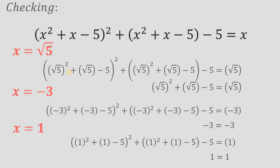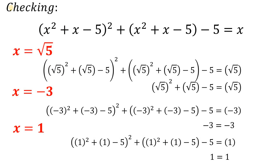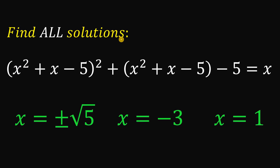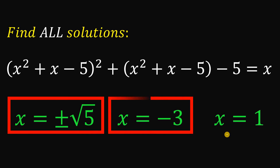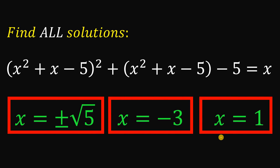And there you have it — these are the four values of x that satisfy this equation: positive or negative square root of 5, negative 3, and positive 1. Here's the checking: I used positive square root of 5 only, but if you plug in negative square root of 5, you arrive at negative square root of 5 equals negative square root of 5. So, to find all solutions to the quantity x squared plus x minus 5 raised to the power of 2, plus x squared plus x minus 5, minus 5, equals x — we found four possible values. And as always, we are done.